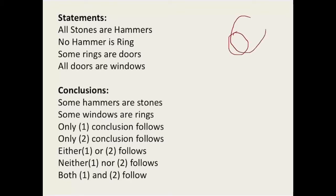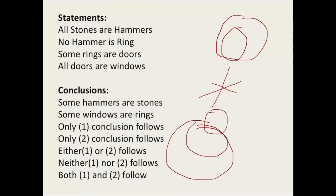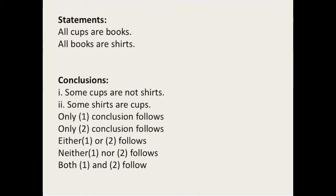You'll get a rough view of how the diagram looks. All stones are hammers — stones are inside hammers. No hammer is a ring — there's no connection between hammer and ring, so they are crossed out. Some rings are doors — rings and doors slightly overlap. All doors are windows — doors are inside windows. From the diagram, 'some hammers are stones' follows because that area contains stones within hammers. Also, 'some windows are rings' follows — both conclusions one and two follow.